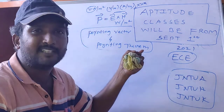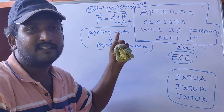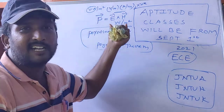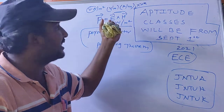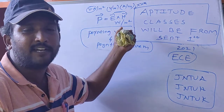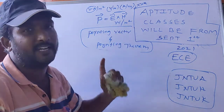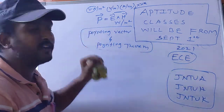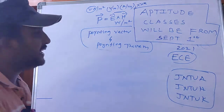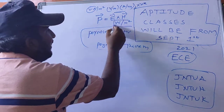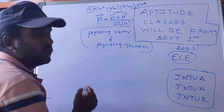Once again: Poynting vector is defined as the cross product of electric field intensity and magnetic field intensity, denoted by P, with units of watts per meter squared.